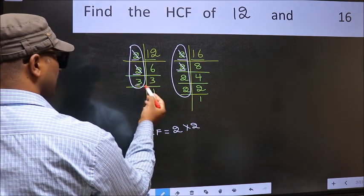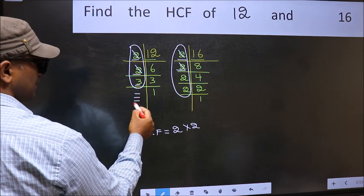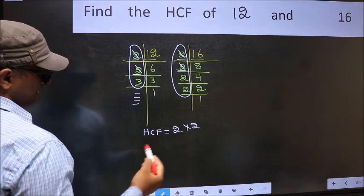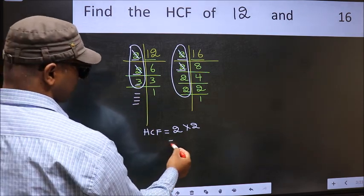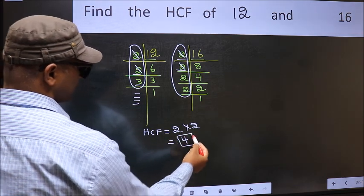Next number 3. Do we have 3 here? No. No more numbers have been left out. So our HCF is 2 into 2. 4 is our HCF.